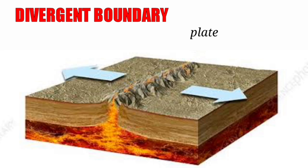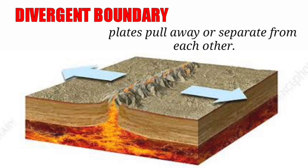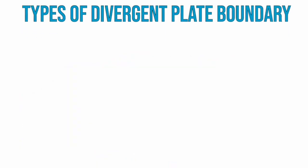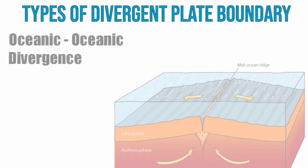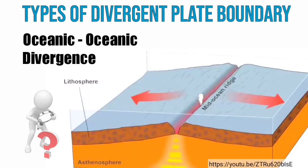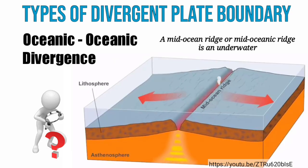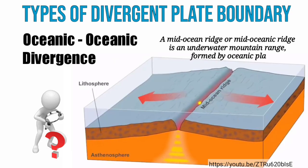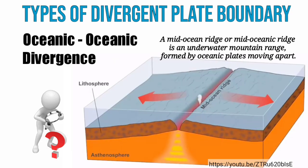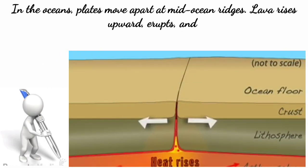Divergent plate boundary happens when plates pull away or separate from each other, as you can see in the arrows shown in the illustration. There are two main types of divergent plate boundary. We have the oceanic-oceanic divergence, which leads to the creation of mid-ocean ridges. A mid-ocean ridge is an underwater mountain range formed by oceanic plates moving apart. In the oceans, plates move apart at mid-ocean ridges.